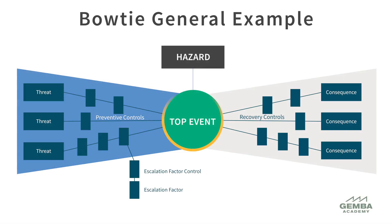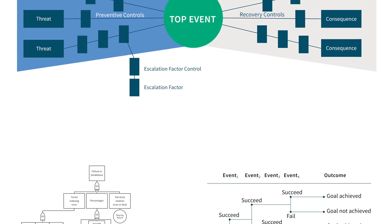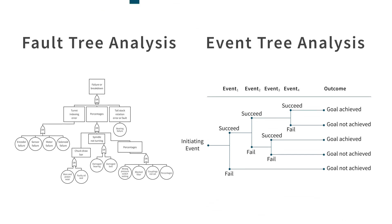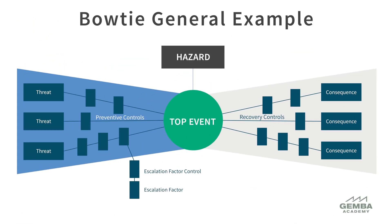This means both sides of the top event are displayed in one diagram as opposed to separately, like in fault tree analysis and event tree analysis. Existing controls and causal relationships are both modeled as well.